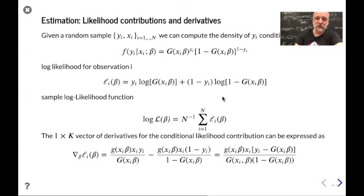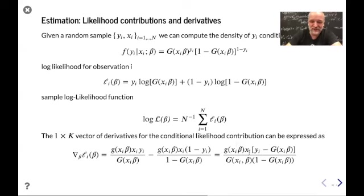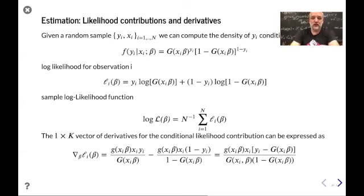That was just the first term. You can do the second term similarly using differentiation of logs and the chain rule. Then the last step is just putting it all on a common denominator. This gives an analytical expression for the derivative of the log likelihood. This is not hard to compute — it's actually not much harder to compute the derivative than the likelihood itself.